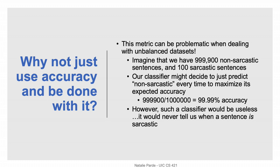Accuracy is a fine metric, but it has some shortcomings that make it not very suitable for some tasks. For example, it does a bad job of describing performance when you have an unbalanced data set. If you have a data set with, say, 999,900 non-sarcastic sentences and 100 sarcastic sentences, your classifier could just sort of shrug and say everything is non-sarcastic, and in doing that, it would achieve 99.99% accuracy. However, it still wouldn't be a useful classifier because it would never actually tell you when an instance was sarcastic.